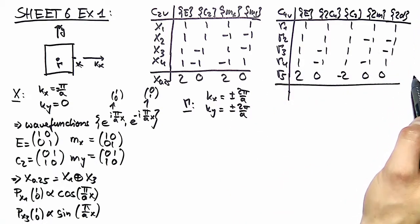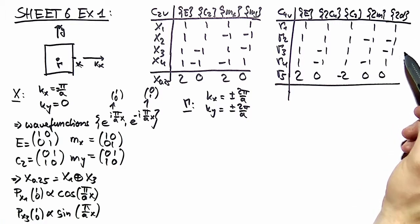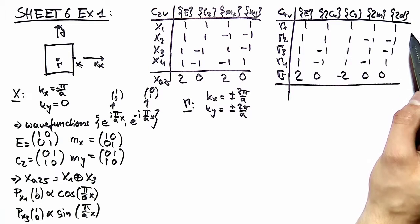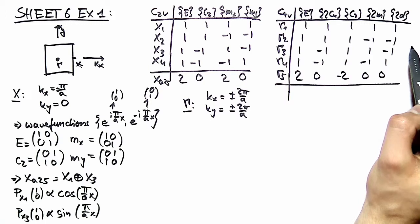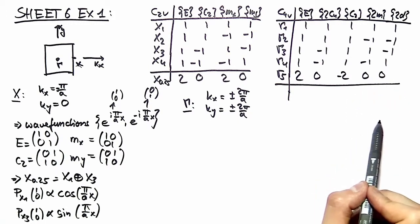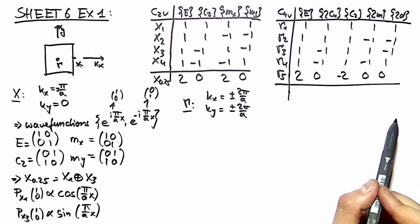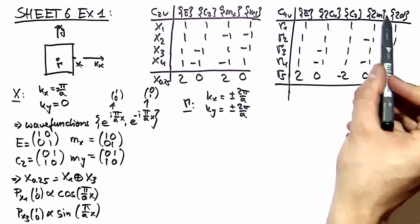The translations are here omitted in the character table because the only physical representations are coming from the characters, or including the translations are those with character 1. Those with other characters are unphysical. Please go back to your notes if this is unclear. Therefore we only note the point group over here.